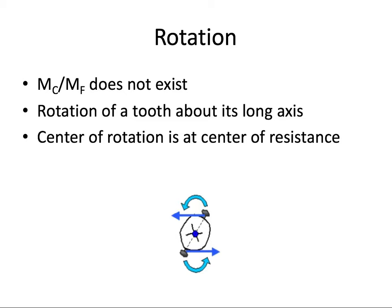For rotation, the ratio is irrelevant — there is no moment of a force, so the denominator is effectively zero. A first-order couple is applied to spin the tooth around its long axis. Pure rotation refers to rotation of a tooth about its long axis. Looking from an occlusal view, a couple alone is applied to the tooth, causing it to rotate about its center of resistance. The center of rotation is at the center of resistance, as seen with a premolar spinning to straighten out in the arch.